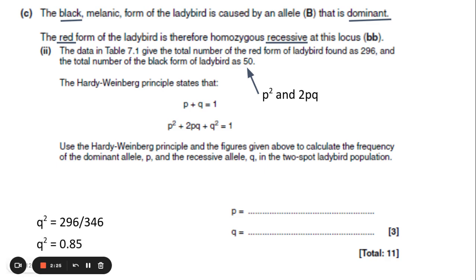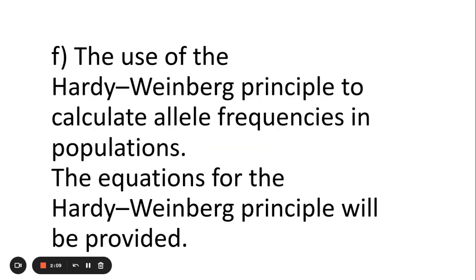I then do q squared. In order to find out q, I do the square root of 0.85 which would give me 0.92. And then in order to find p, I would do one take away q which would give me 0.08. And that's pretty much everything you need to know about Hardy-Weinberg. Just remember to start off with q squared and everything should fall into place. Good luck with your exams and all the best.